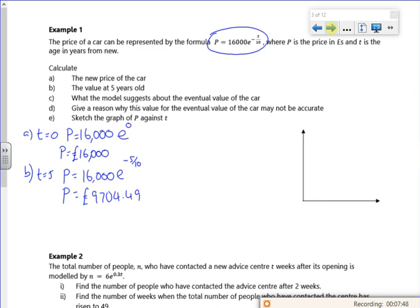What does the model suggest about the eventual value of the car? So as t gets massive, eventually P is going to be zero. So it tends to zero. Give a reason why this value for the eventual value might not be accurate. Well, does it go to zero? We'll probably get scrap value, won't we? So we've got some form of scrap value going on.